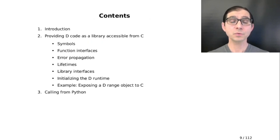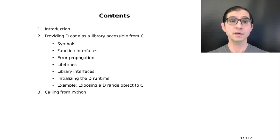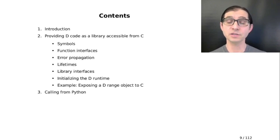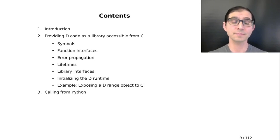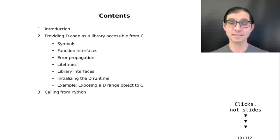My presentation will not be directly exposing to Python, but first exposing your D code as a C library, which will also be available from Python. This involves symbols, function interfaces, error propagation, object lifetimes, library interfaces, and initializing the D runtime. After talking about those, I will give you an example on how to expose a D range object to C. Once we do that, we will be able to call the same library from Python.